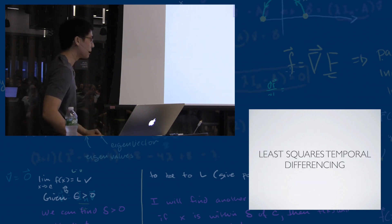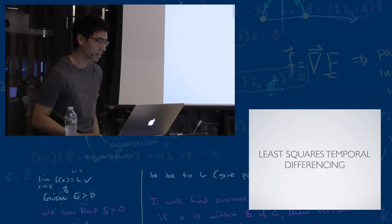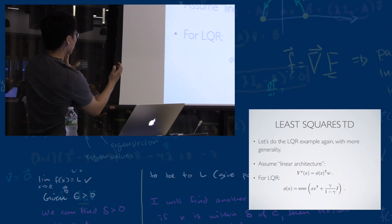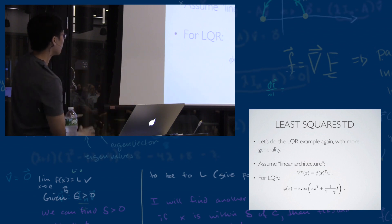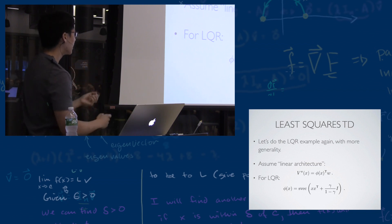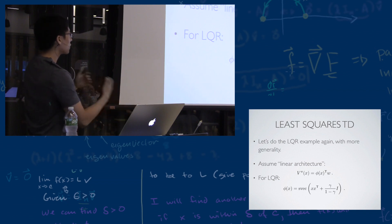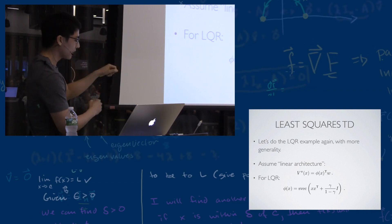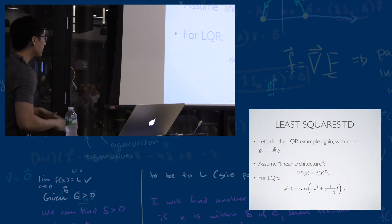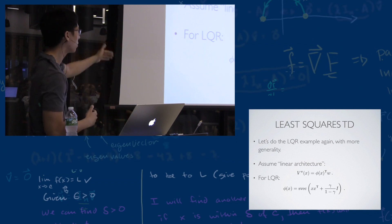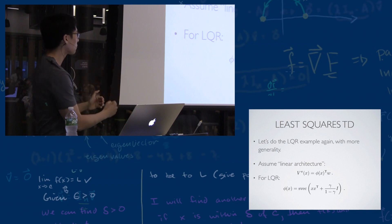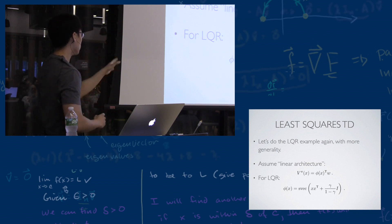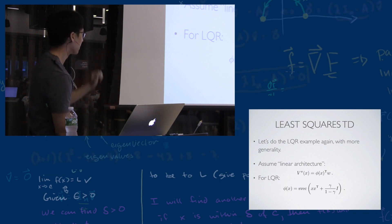Now to RL: we'll do the same thing but more generally. This is known as least squares temporal differencing. Instead of assuming a quadratic value function as in LQR, we assume a linear architecture — the value function is a feature map phi acting on the current state, lifting it to a higher-dimensional space, with the function being linear in that space. This is the same idea as nonlinear regression or kernel methods in machine learning. This isn't very restrictive — LQR exactly falls into this category, so the feature map for LQR is just quadratic in the state.